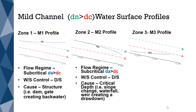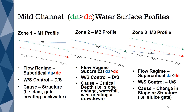An M3 profile is formed in Zone 3, where the flow regime is supercritical. A supercritical flow condition occurs when the actual depth is less than the critical depth. Flows that are supercritical are always controlled upstream. For an M3 profile to occur, there needs to be something upstream causing the water surface to be below critical depth. This will occur when there is a slope change or a sluice gate.